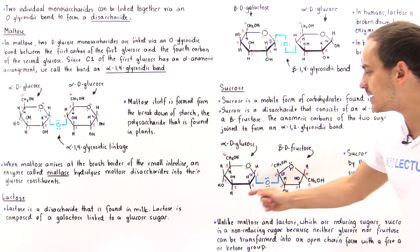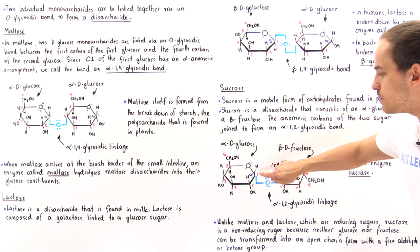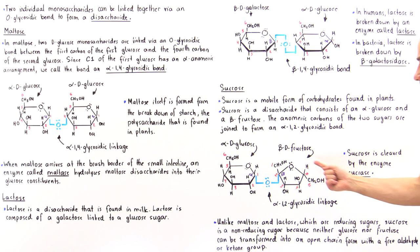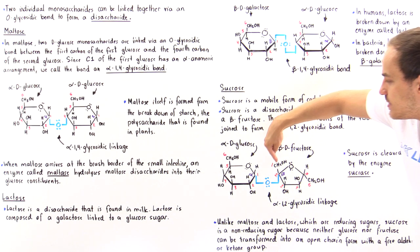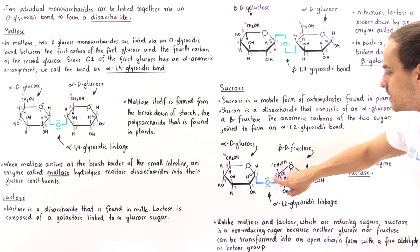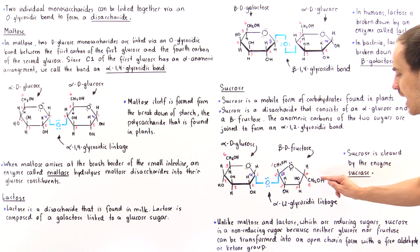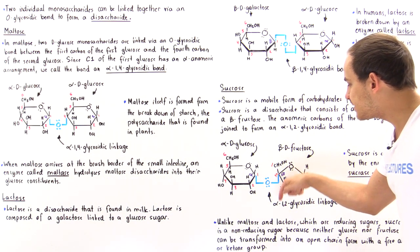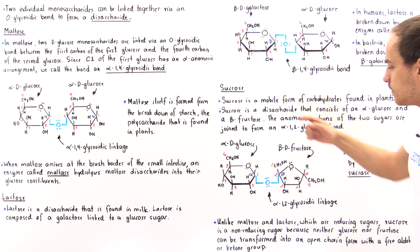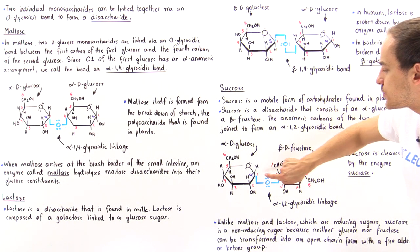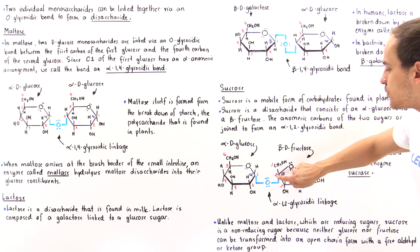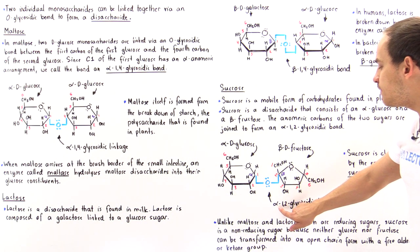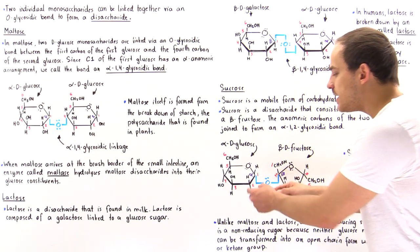In sucrose, we have alpha-D-glucose in its cyclic form with carbons one through six, where the alpha arrangement has the bond pointing downward, opposite to the CH₂OH group. The beta-D-fructose has carbon two as its anomeric carbon, and this group points downward in the same direction as the reference group, making it the beta anomer. Because there is a bond between two anomeric carbons — carbon one of glucose and carbon two of fructose — this is called the alpha-1,2-glycosidic linkage.